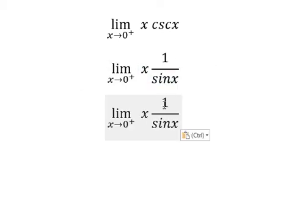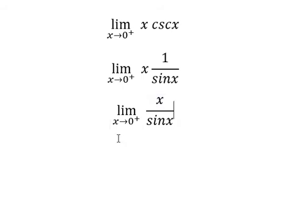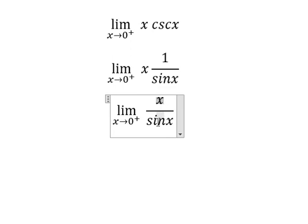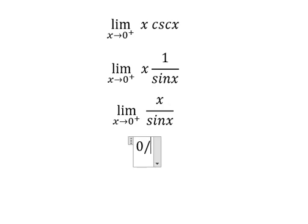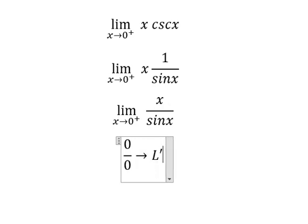So s will go in here. When s approaches zero from the right, the numerator gives zero and the denominator gives zero, so we have zero over zero. We can use L'Hôpital's rule.